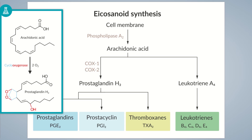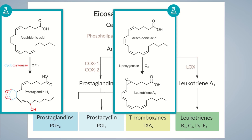Isoenzymes catalyze the same reaction but differ slightly in their structure. These minor structural differences enable some drugs to selectively influence COX-2 but not COX-1, which may be desirable as they have different biological functions. COX-1 is present in almost all cell types and is constantly active, whereas COX-2 is only expressed under certain conditions such as an inflammatory response. On the right side of the image, the enzyme lipoxygenase — in short LOX — uses arachidonic acid as a substrate and catalyzes its conversion to leukotriene A4. In contrast to COX, oxygen is incorporated into the molecule without forming a cyclic structure.